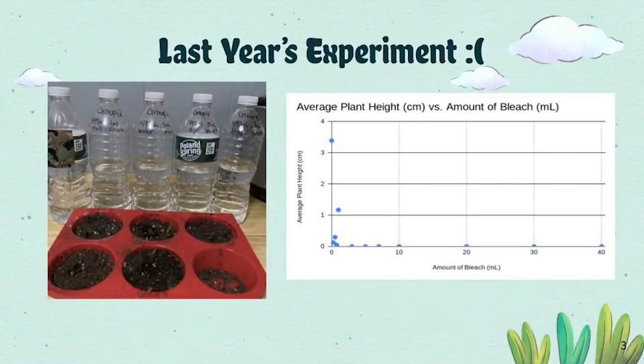Last year, you may remember me as I did this experiment, but instead of using basil plants, I used pansy plants, which is also known as Viola wittrockiana. This was definitely a frowny face experiment because I didn't receive that much data because majority of my groups didn't grow, as shown on the graph on the right.